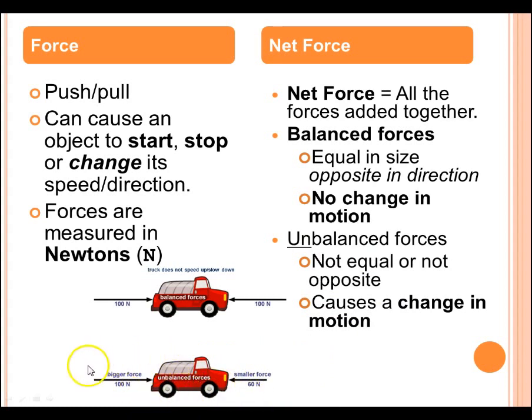So, here's that same truck. There's a bigger force pushing it to the right. That engine is working really hard, putting 100 newtons of force to the right, and the wind resistance isn't that strong, only 60 newtons to the left. So, there's a net force of 40 going to the right, which means the truck will accelerate in that direction.